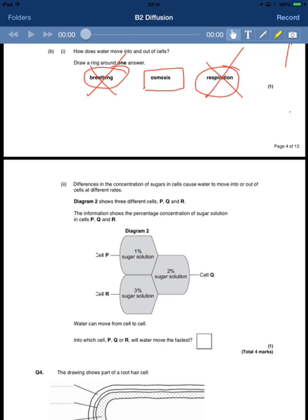Differences in the concentration of sugars in cells cause water to move into or out of cells at different rates. Diagram 2 shows three different cells P, Q, and R. The information shows the percentage concentration of sugar solution: 1% sugar, 2% sugar, 3% sugar.